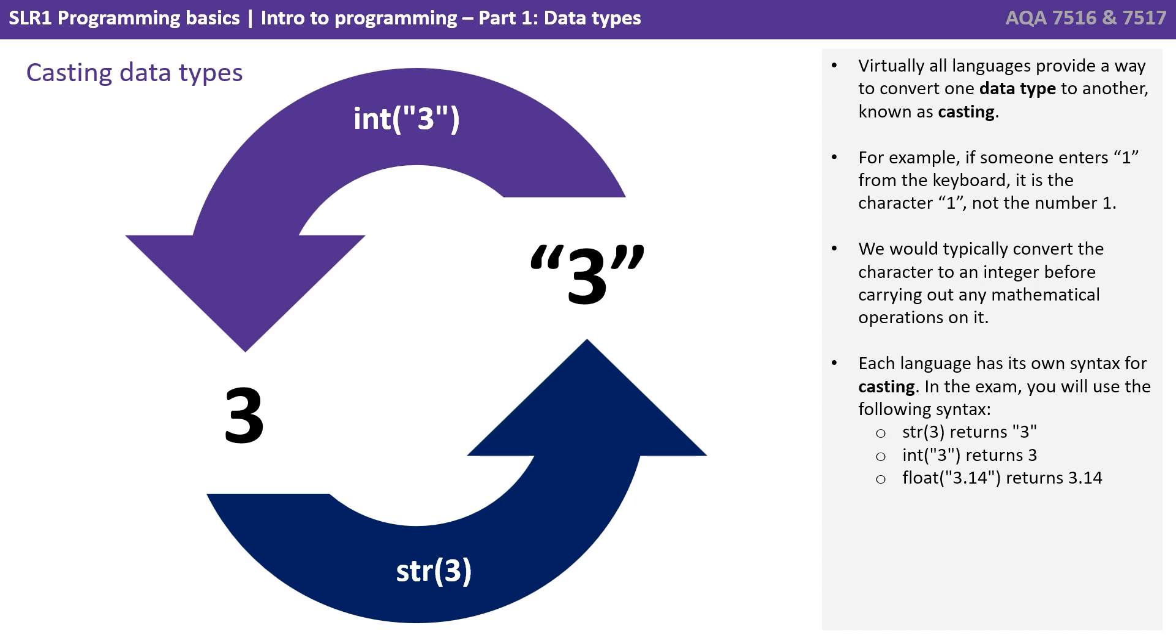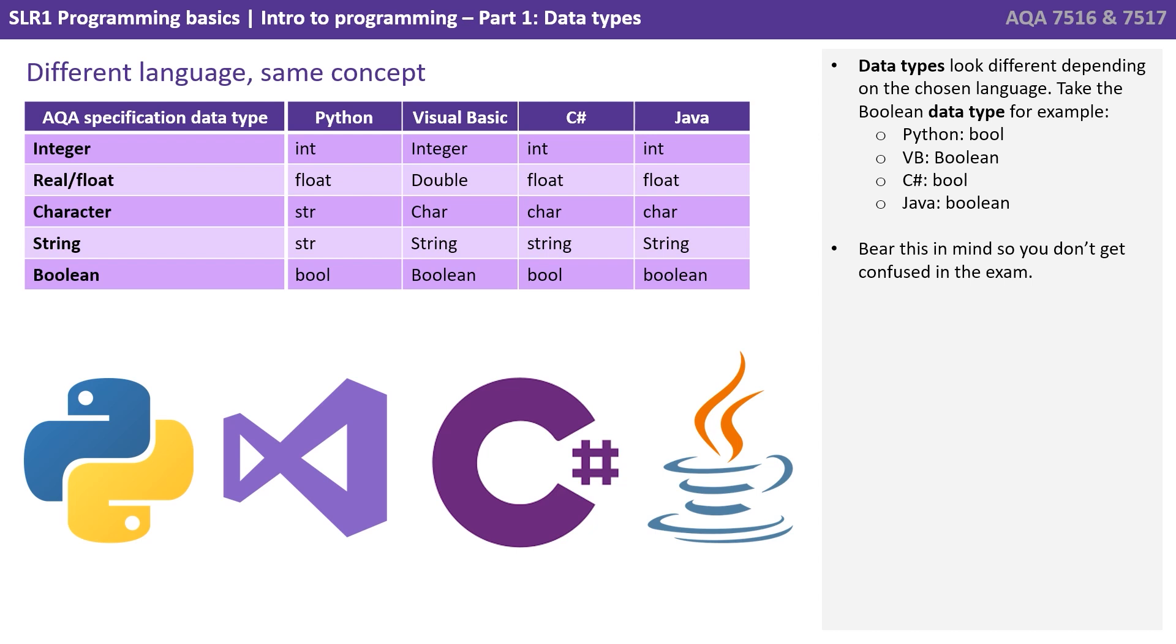Let's also talk briefly about casting. So virtually all languages provide a way for you to convert one data type to another. This is known as casting. For example, if someone enters or types one from the keyboard, it is the alphanumeric character one, not the integer number one. We would typically convert the character to an integer before carrying out any mathematical operations on it. Each language has its own syntax for casting. In the exam, we'll use the following syntax shown on the screen.